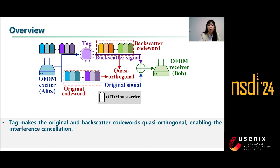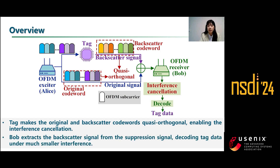These cohorts have two features. First, since O-Scatter transmits data at a single symbol rate, the length of the backscatter cohort equals that of an OFDM symbol, though it is not an OFDM symbol — it is constructed by combining halves of two successive OFDM symbols. Second, the original cohort overlaps with the backscatter cohort in both time and frequency domain, causing significant interference for tag data decoding. Fortunately, thanks to the quasi-orthogonal relation between cohorts, the receiver can perform interference cancellation before decoding the tag data, providing better transmission performance.